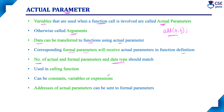There are three elements in a user-defined function: function declaration, function call, and function definition. In the function declaration and the function header of the function definition, everything should be the same — that is, the function name, return data type, and the parameter list along with its data type. Both the function declaration and function header should match the function call. In the function call, the return data type is not used, and parameters are not mentioned with their data type — simply the function name and parameters are mentioned.